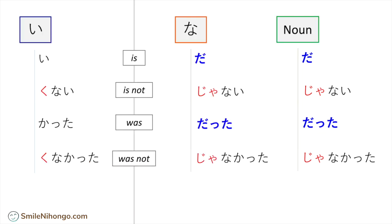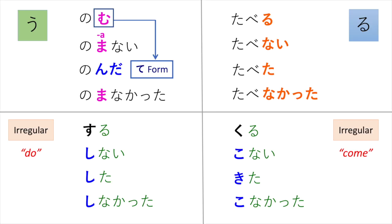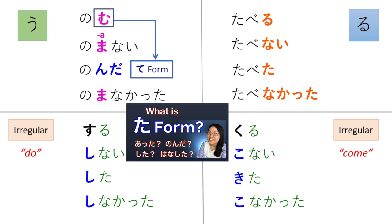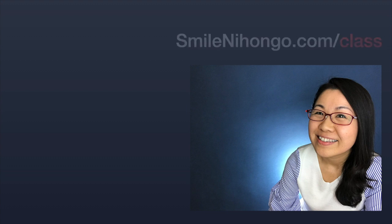We have covered plain form conjugations for i-adjectives, na-adjectives, nouns, and all the verb groups. Be sure to review plain past for Japanese verbs in the previous lesson. I hope you enjoyed the lesson. If you liked my lesson and are interested in my online courses, you can check them at smilenihongo.com/class. では、また次のレッスンで会いましょう!